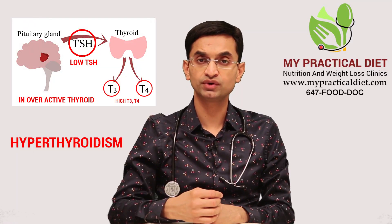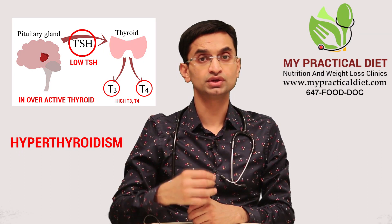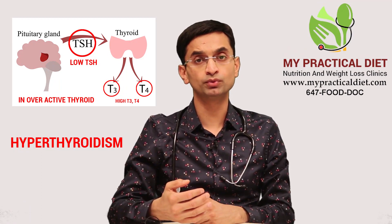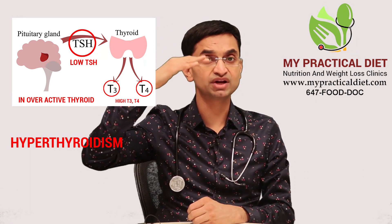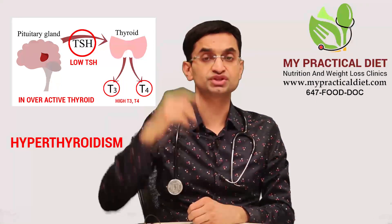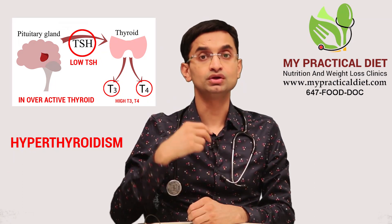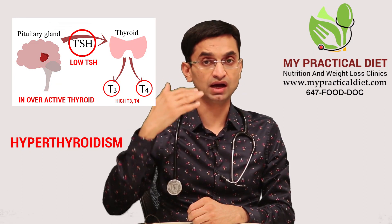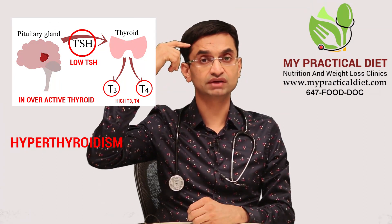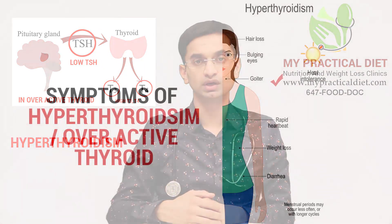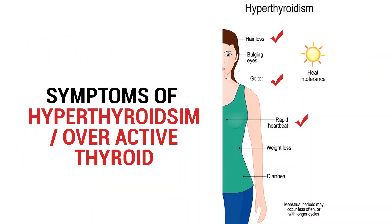The third situation is an overactive thyroid, also known as hyperthyroidism or thyrotoxicosis. In this case, the thyroid gland releases too much thyroid hormone, which then goes to the brain and suppresses the production of TSH from the pituitary gland. So your T4 or T3, or both, will be high and the TSH level from the brain will be low. Some of the symptoms of an overactive thyroid are heart racing, anxiety, sweating, weight loss, or frequent bowel movements, and in some cases a fever may also arise.